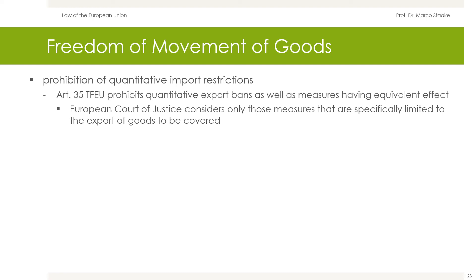Article 35 TFEU prohibits quantitative export bans as well as measures having equivalent effect. A difference to Article 34 TFEU arises with regard to the interpretation of the term 'measures having equivalent effect.' The European Court of Justice determines its content on the basis of the so-called Groenveld formula, but considers only those measures that are specifically and strictly limited to the export of goods to be covered — otherwise almost any norm relating to the production or distribution of goods would fall under Article 35 TFEU.